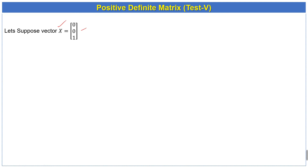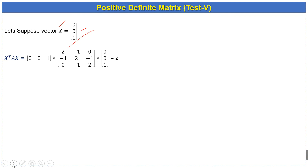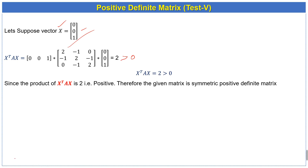Let's suppose the column vector x equals a specific vector. We substitute it and compute x^T A x. The given matrix A and the column vector x are multiplied, and the product of all these terms equals 2, which is greater than zero — confirming it is positive.